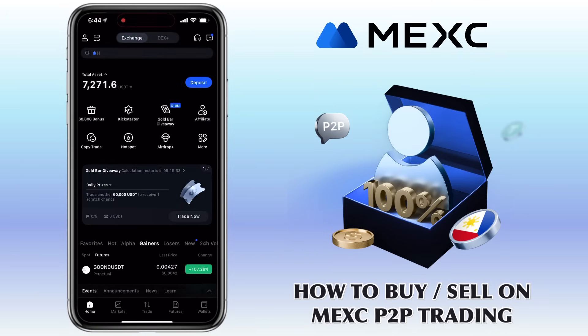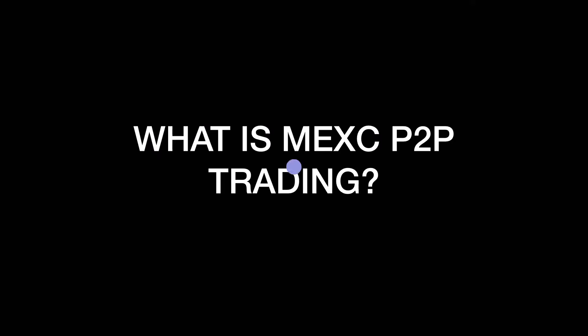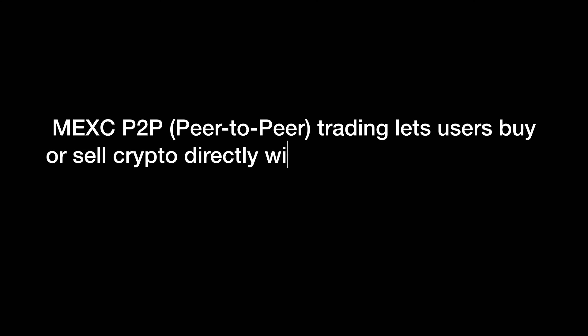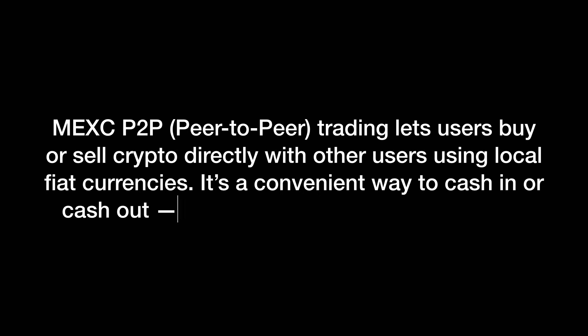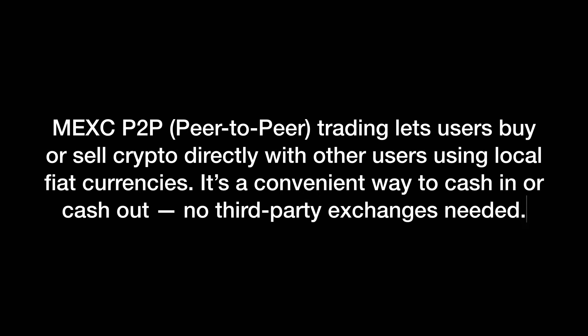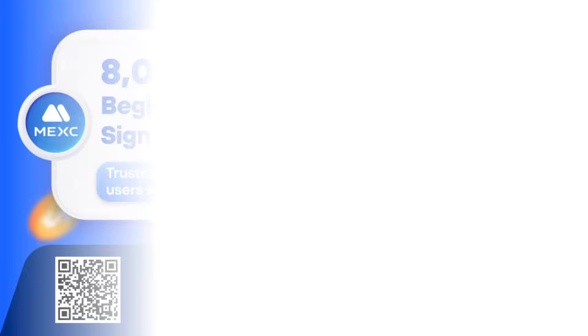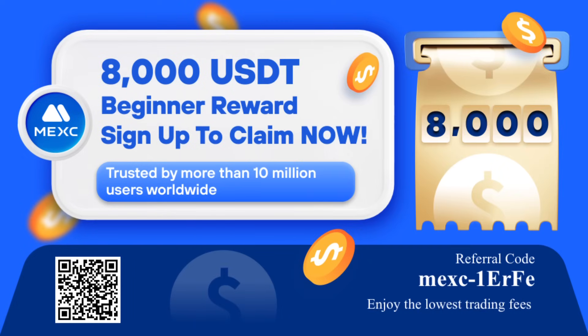So what is Maxi P2P trading? Maxi peer-to-peer trading lets users buy or sell crypto directly with other users using local fiat currency. It's a convenient way to cash in or cash out — no third-party exchanges needed. By the way, if you haven't signed up on Maxi Global, check the video description for the sign-up link.